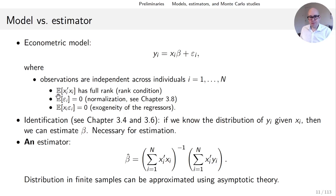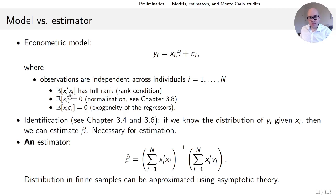First, the rank condition: the product xi'xi in expectation has full rank. Let's check dimensions — xi is 1 by k, so xi' is k by 1, and multiplied by xi (1 by k), xi'xi is k by k. The expectation is also k by k and is assumed to have full rank.